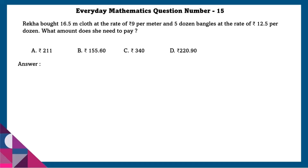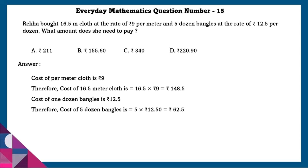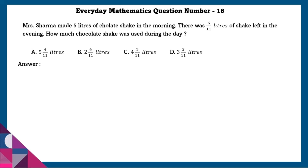Question 15: Reka bought 16.5 meters of cloth at the rate of 9 rupees per meter and 5 dozen bangles at the rate of 12.5 rupees per dozen. What amount does she need to pay? Cost of 16.5 meters of cloth is 148.5 rupees. Cost of 5 dozen bangles is 62.5 rupees. Total amount to pay is 148.5 + 62.5 = 211 rupees.